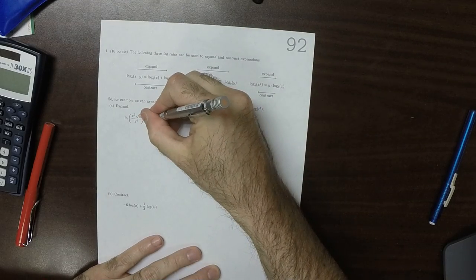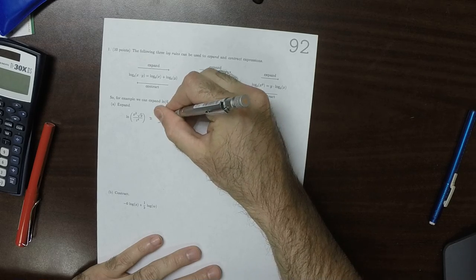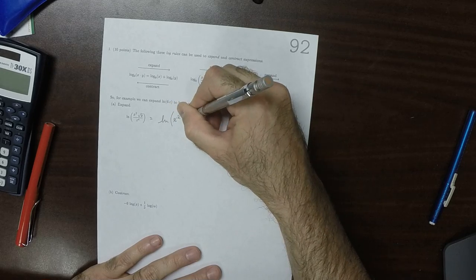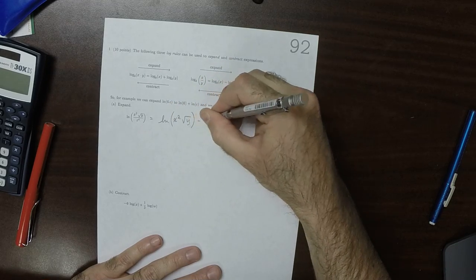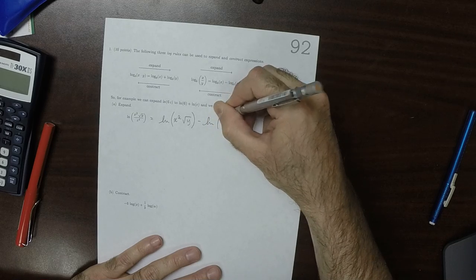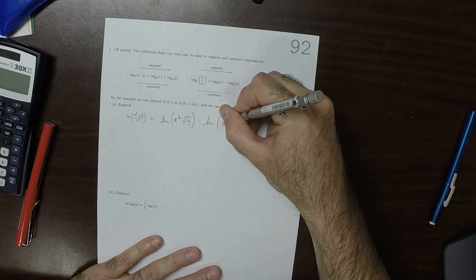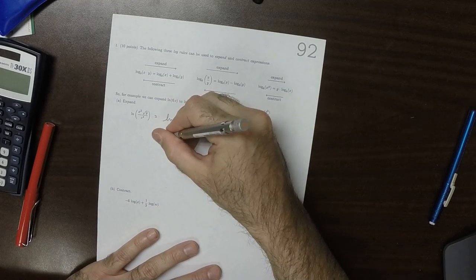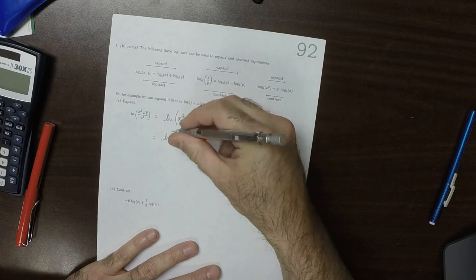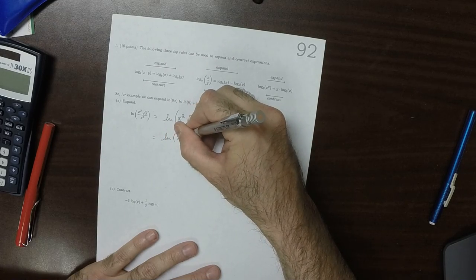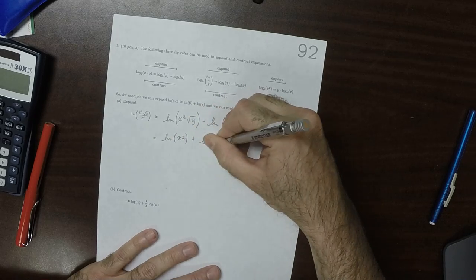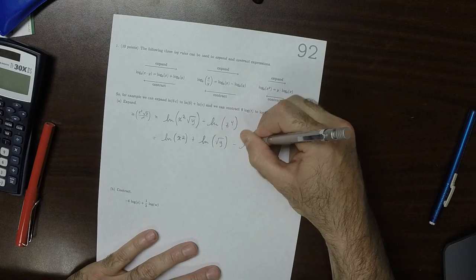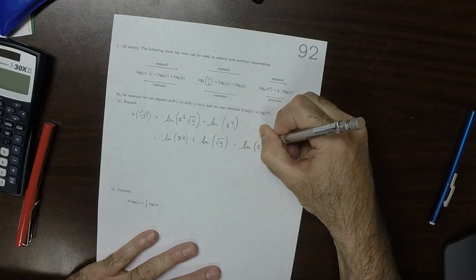Then the first expansion would be that this could be written as the log of x squared square root y minus the log of z to 4, but then that product can be expanded to log of x squared plus log of square root y minus log of z to 4.